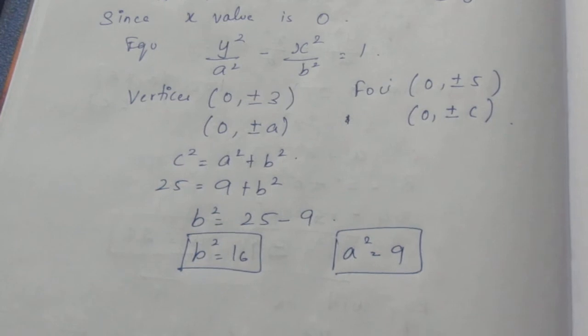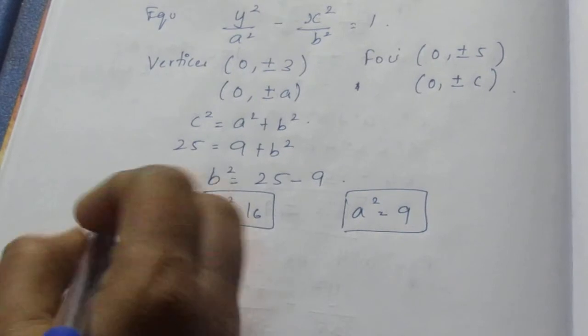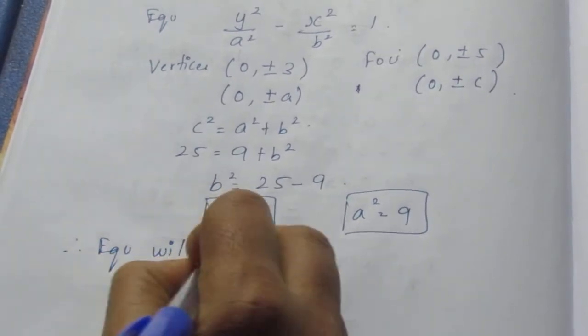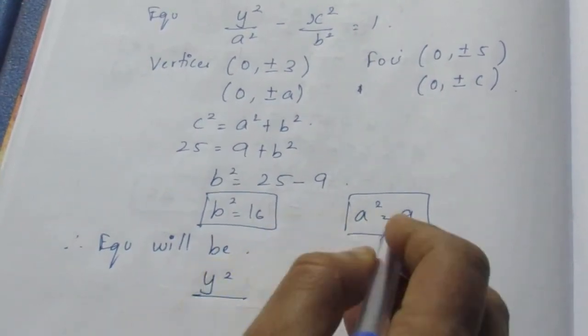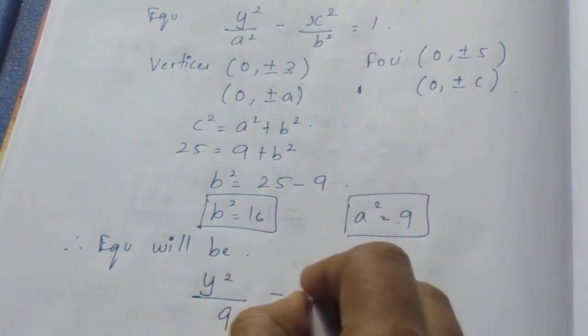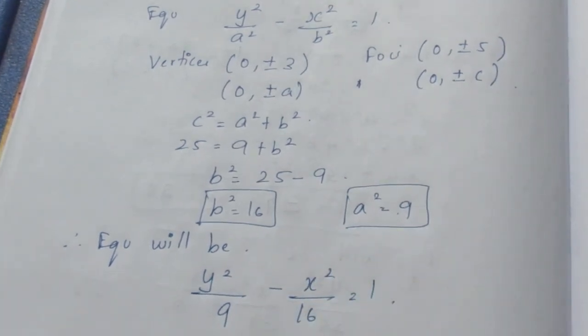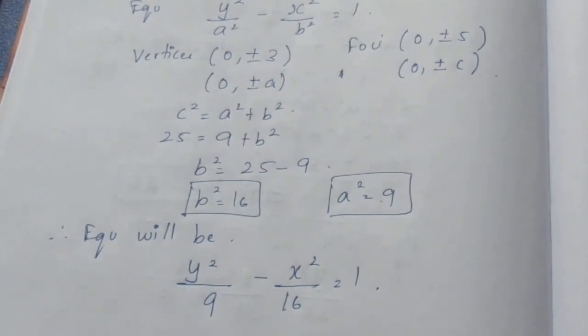So we can substitute directly in the formula to find the equation of the hyperbola. The equation becomes y²/9 - x²/16 = 1 is the required equation of the hyperbola for the given sum. That is all with the sum. Thank you.